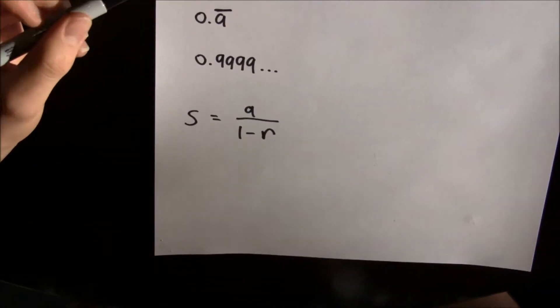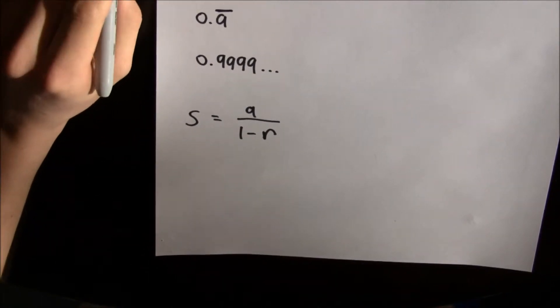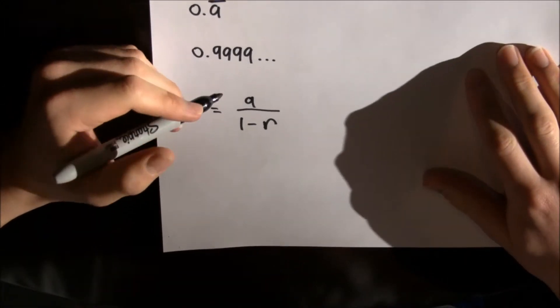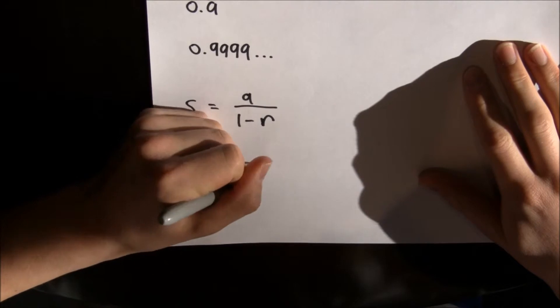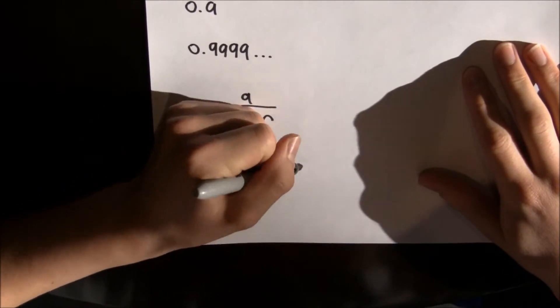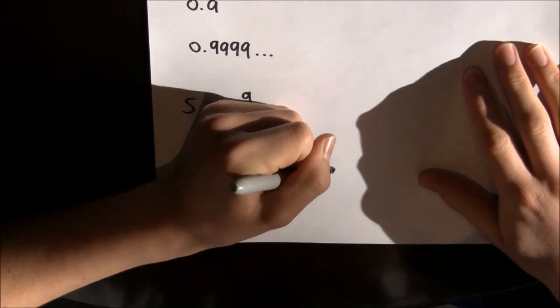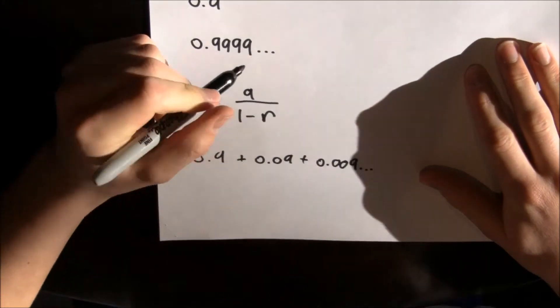So let's write 0.9 repeating as an infinite geometric series. We've got 0.9 plus 0.09 plus 0.009, and that goes on forever.